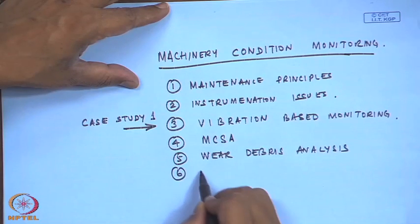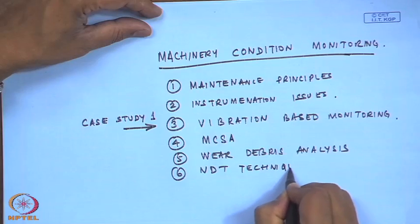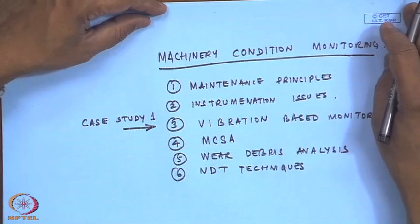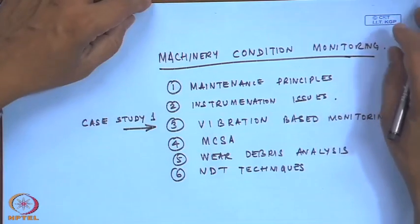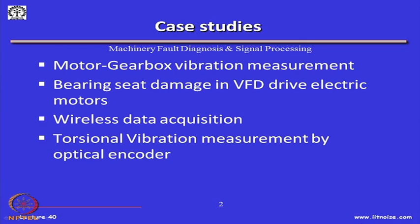In past lectures, real-life examples were brought into the classroom, and some of those can be treated as case studies. In this class specifically, there will be about four case studies. The most general one is the motor-gearbox vibration measurements, because any plant in the industry is driven by a motor which could be directly driving a gearbox, a blower, a fan, a compressor, or any other crushing unit.